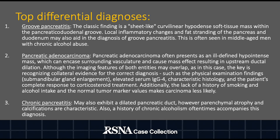Pancreatic adenocarcinoma often presents as an ill-defined hypointense mass, which can encase surrounding vasculature and cause mass effect, resulting in upstream ductal dilation. Although the imaging features of both entities may overlap, as in this case, the key is recognizing collateral evidence for the correct diagnosis, such as physical examination findings like submandibular gland enlargement, elevated serum IgG4, characteristic histology, and the patient's complete response to corticosteroid treatment. Additionally, the lack of a history of smoking and alcohol intake and normal tumor marker values makes carcinoma less likely.